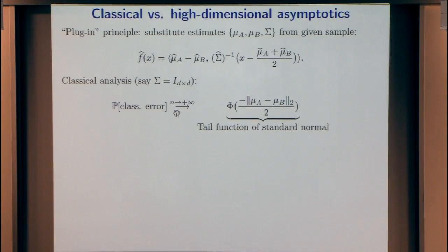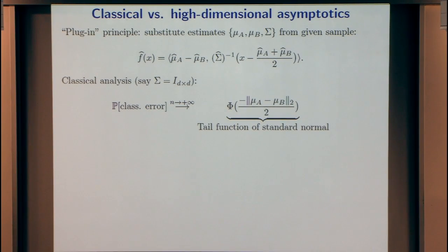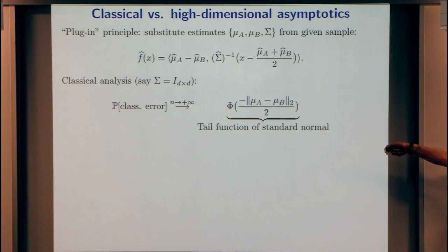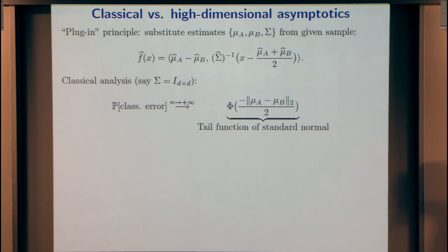In practice, we don't know the means. The plug-in principle in statistics says: just estimate the means using the sample versions, using the same rule but plugging in sample means and covariances. In a classical analysis where everything stays fixed, you can analyze this easily. As n goes to infinity, the probability of making a mistake on a new unlabeled sample will converge to the tail function of a normal distribution, depending on the mean separation — if the means are far apart, the problem is easier.